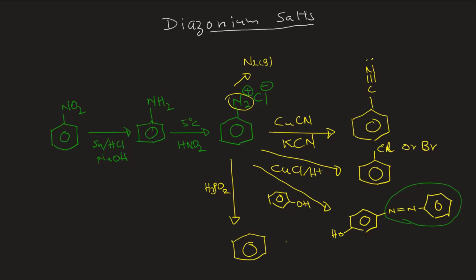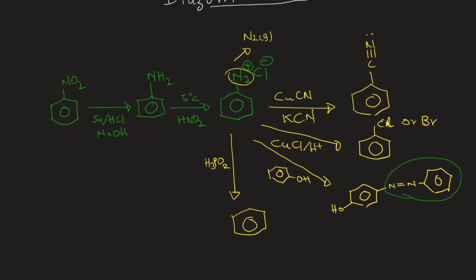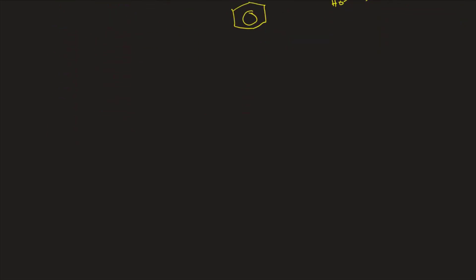So because making diazonium chloride is very hard and expensive. But anyway, so you react diazonium chloride with hypophosphorous acid, H3PO2, and that will give you benzene. So a whole bunch of reactions that we can do with diazonium chloride.